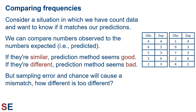If the observed numbers and predicted numbers are similar, then the prediction method seems good. If the observed numbers and predicted numbers are different, then the prediction method seems bad. However, even if the prediction method is perfect for the population, our sample may differ because sampling error and chance will cause a mismatch. How different is too different? For this, we'll need a statistical test and a probability distribution.